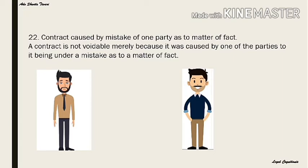Section 22 says: contract caused by mistake of one party as to a matter of fact. If only one person makes a mistake, it is called unilateral mistake; if two persons make a mistake, it is called bilateral mistake. A contract is not voidable merely because it was caused by one party being under a unilateral mistake as to a matter of fact.